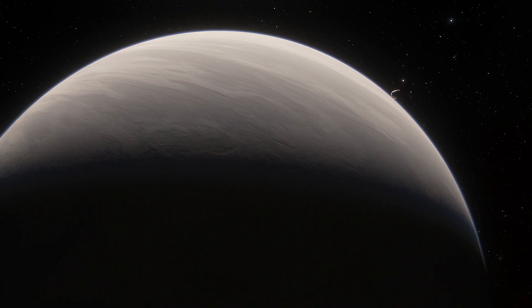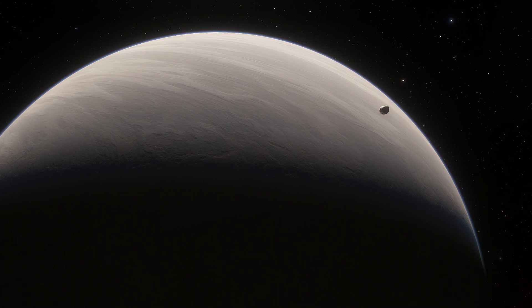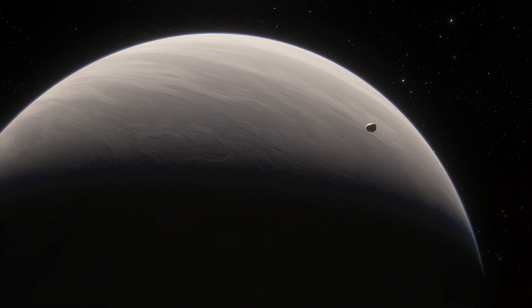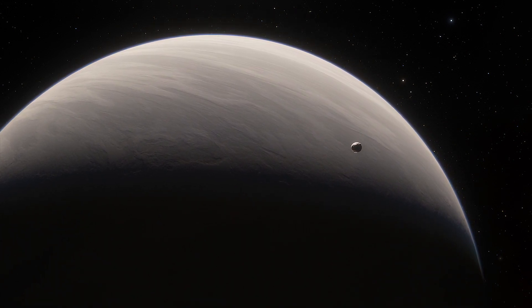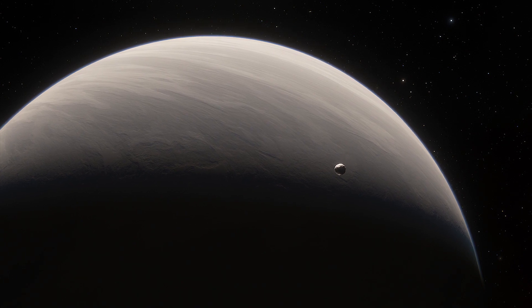The planet orbiting the star every 13 days, dubbed Planet D, is most interesting to scientists. That's because it falls within the star's habitable zone where liquid water could exist on the surface.